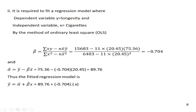Always remember: when the correlation coefficient is negative, beta will also be negative. From the value of beta, putting it into the equation y-bar minus beta times x-bar, you will get alpha equal to 89.76. Thus, putting the values of alpha-cap and beta-cap — 89.76 and minus 0.704 — this is the fitted regression line of longevity on number of cigarettes x. So y-hat equals 89.76 minus 0.704 times x. That is the fitted regression line.